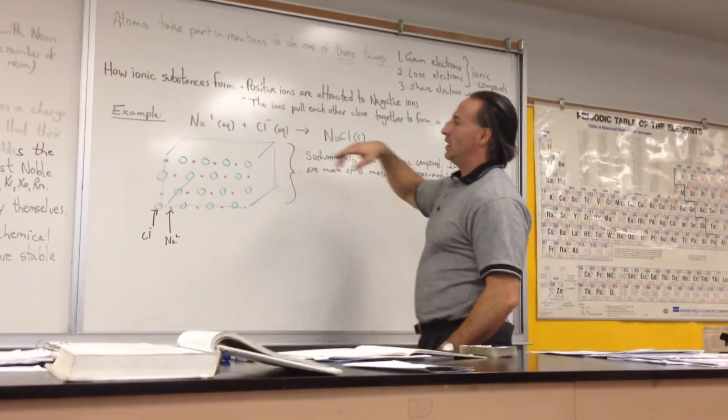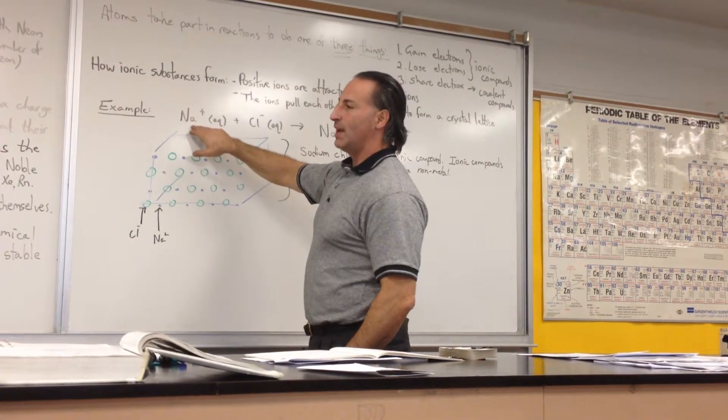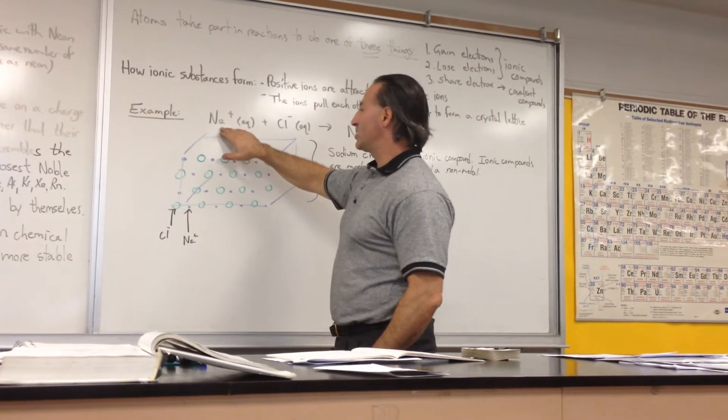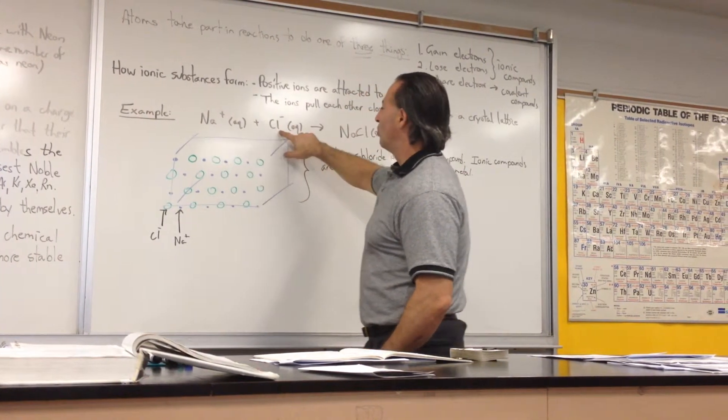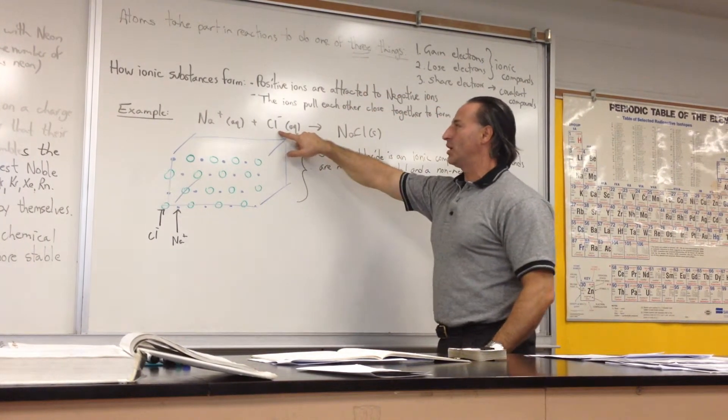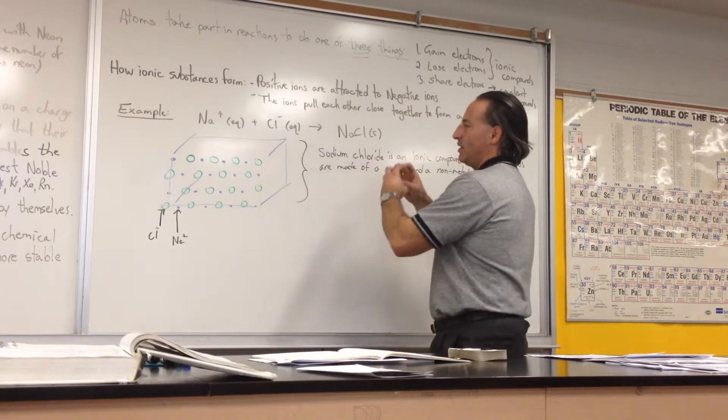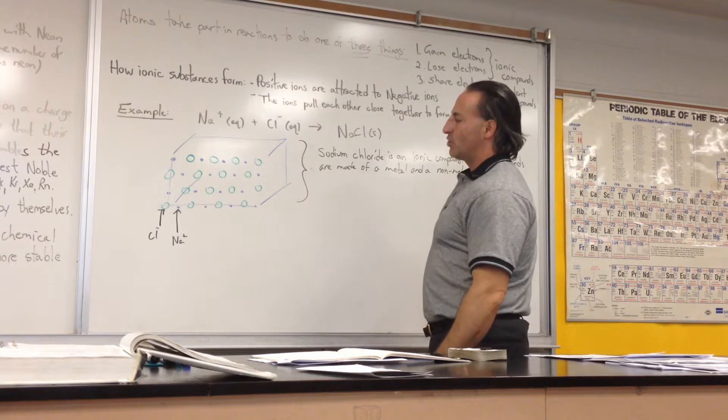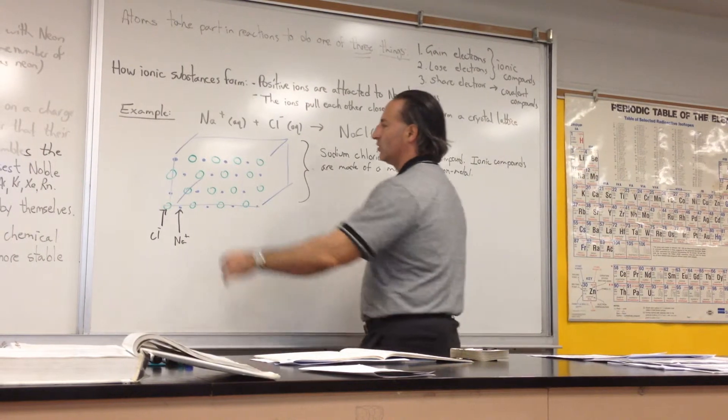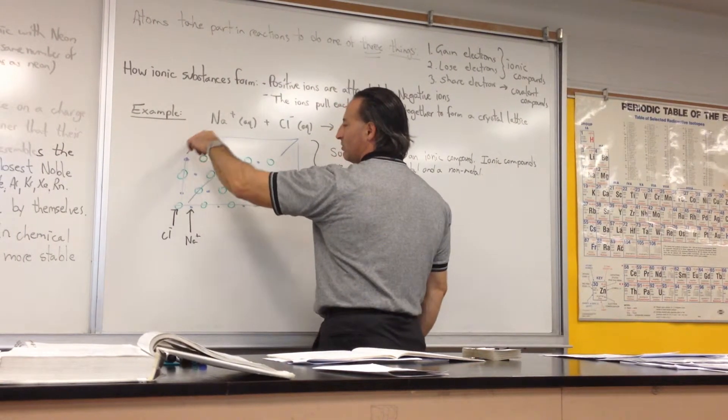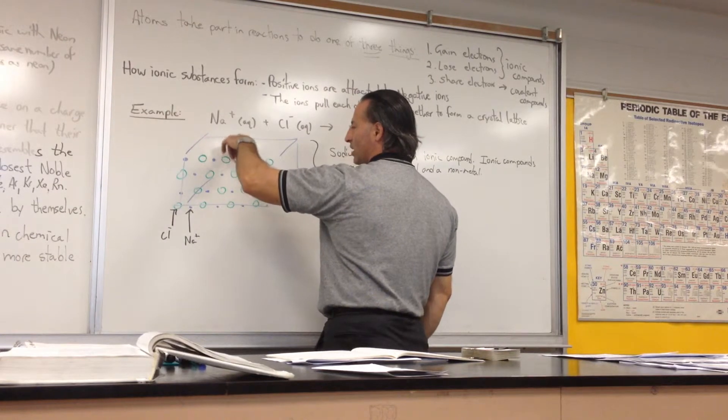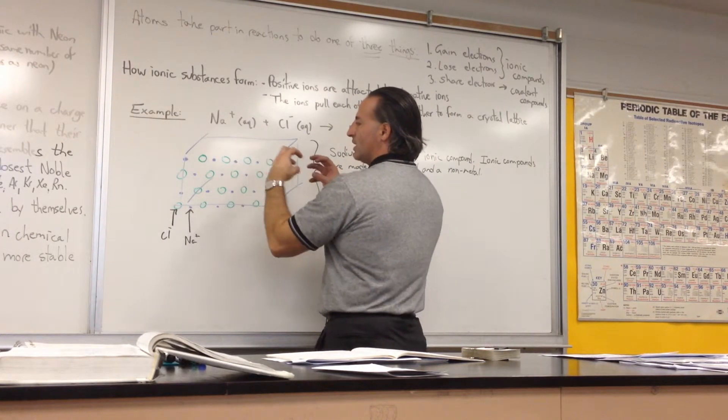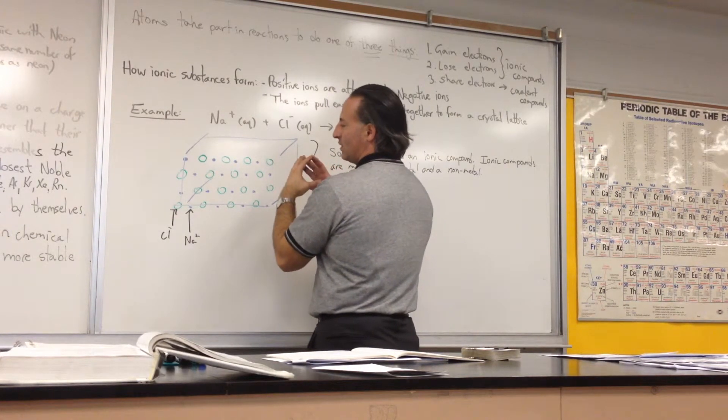For example, sodium and chlorine. The sodium cation has a positive 1 charge. The chloride anion has a negative 1 charge. They are attracted electrostatically to form sodium chloride. If you were to look at a crystal of sodium chloride, you would see alternating sodium chloride, sodium chloride, sodium chloride. And what they do is they get close together, and they are attracted electrostatically.